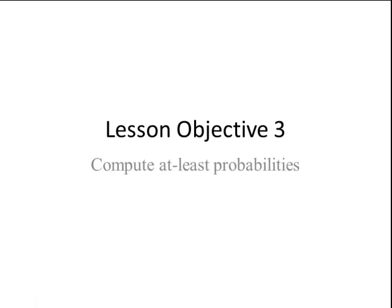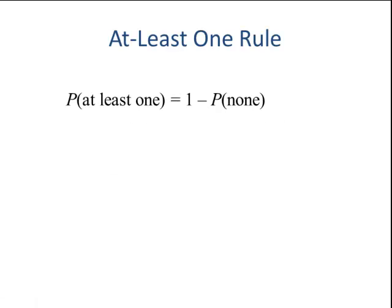Lesson objective number three. The probability of at least one is equal to one minus the probability of none.